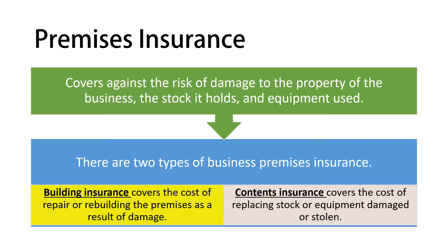There are two types of business premises insurance. The first is building insurance, which covers the cost of repairing or rebuilding the premises as a result of damage. If you have building insurance and anything happens to your building, the insurance company will pay compensation so you can repair your building.